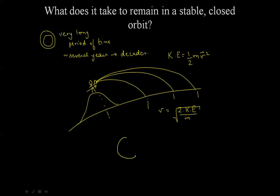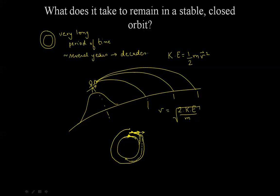Going back to our Earth scenario, say you are standing on the mountain again and you throw the baseball. If you don't throw it hard enough, it's going to go out there and then fall back to Earth. If you throw it really hard, it might go a fair bit into space, but it will still come back. But if you throw it harder and harder, at one point the baseball will eventually go all the way around and come back to its starting position, completing the process over and over again. This is a stable and closed orbit.